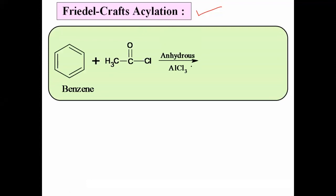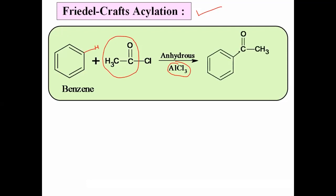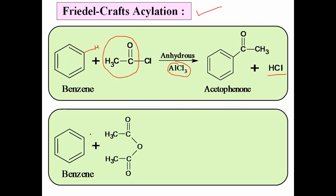This reaction with acetyl chloride is carried out in the presence of anhydrous AlCl3 — again using Lewis Acid Catalysts like AlCl3, FeCl3, BF3, ZnCl2, etc. The aromatic ring reacts with the acyl chloride and hydrogen from the aromatic carbon is replaced by the acyl (COCH3) group, giving the substituted product. We can also use acetic anhydride instead of acyl halide, also in the presence of Lewis Acid Catalyst.